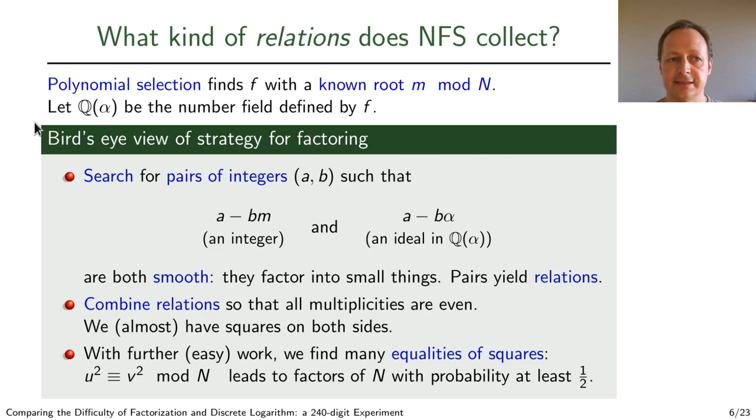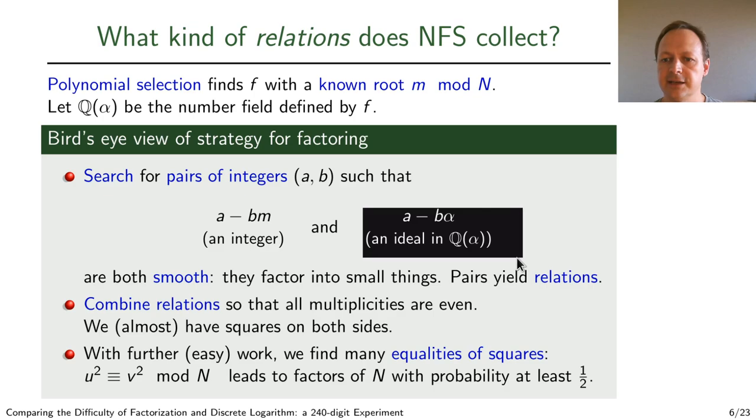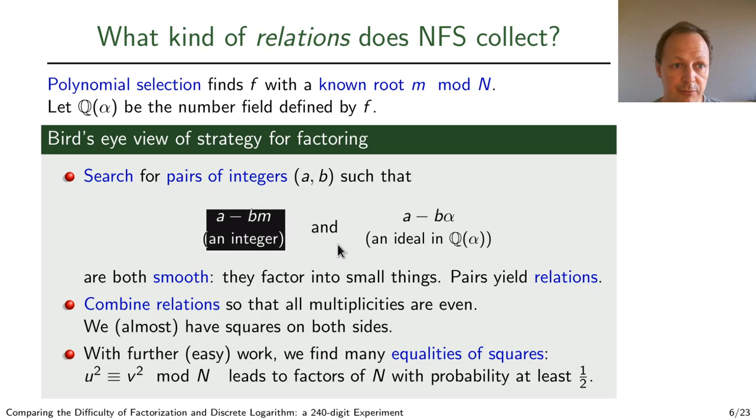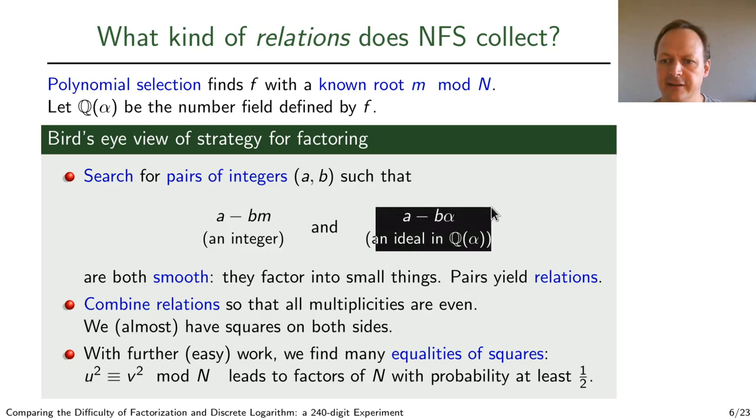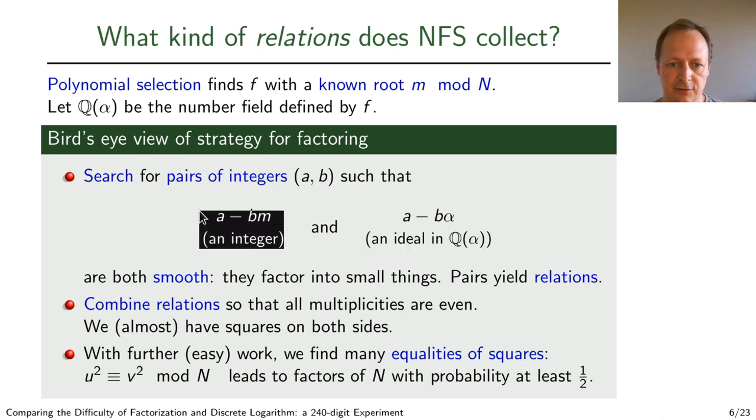When NFS collects relations, what it does is that it searches for pairs of integers A and B, such that two fairly exceptional events occur. Namely, that the integer A minus BM, and the principal ideal generated by the element A minus B alpha in the number field, both factor into small things. We say that both are smooth. Small things means small prime numbers, and here it means small prime ideals. When we have such pairs AB, we say that we have relations.